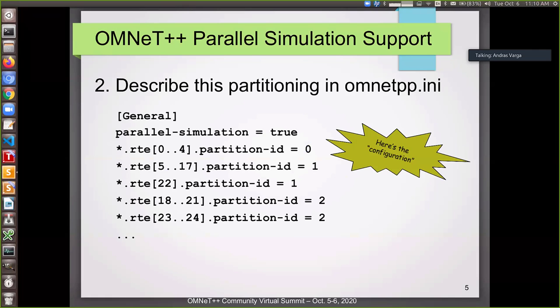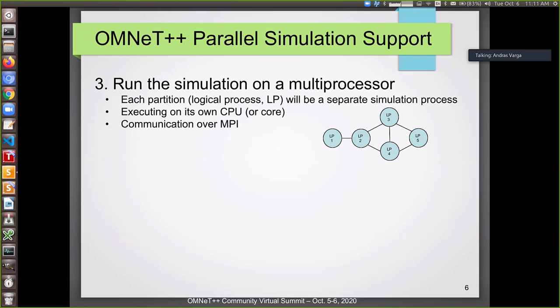So if the partitioning is done, then you have to describe it to OMNeT, which is in OMNeT PP.ini, this is partition ID configuration options. This can be quite lengthy if you have a lot of routers or modules. And then you run the simulation on a multiprocessor. In this case, we have five logical processes, so there will be five processes. And the lines here in the graph, they show the communication part, actually.